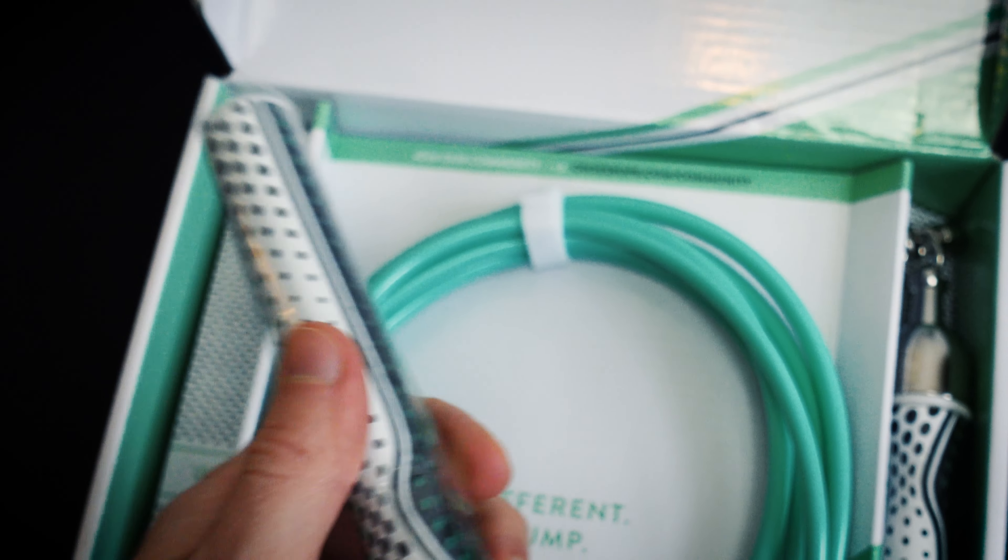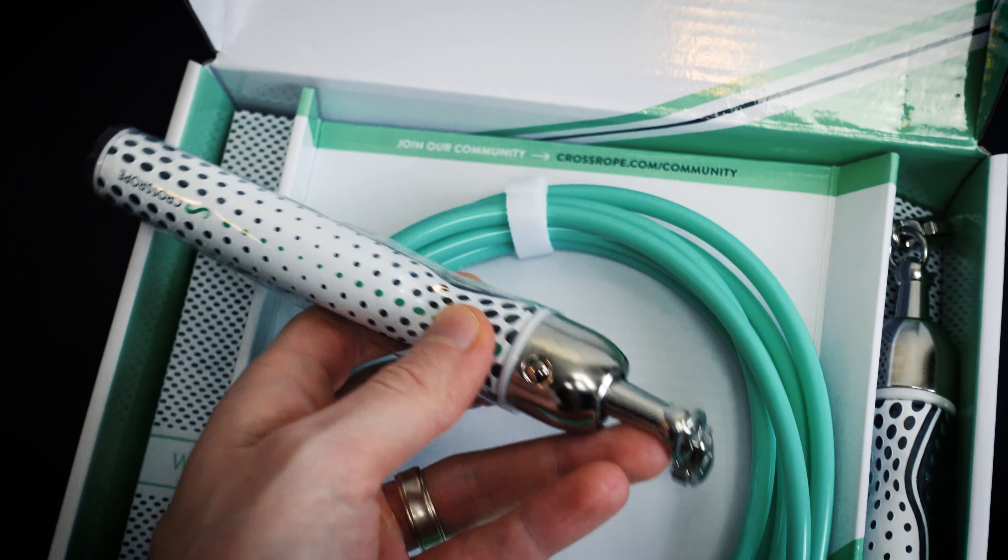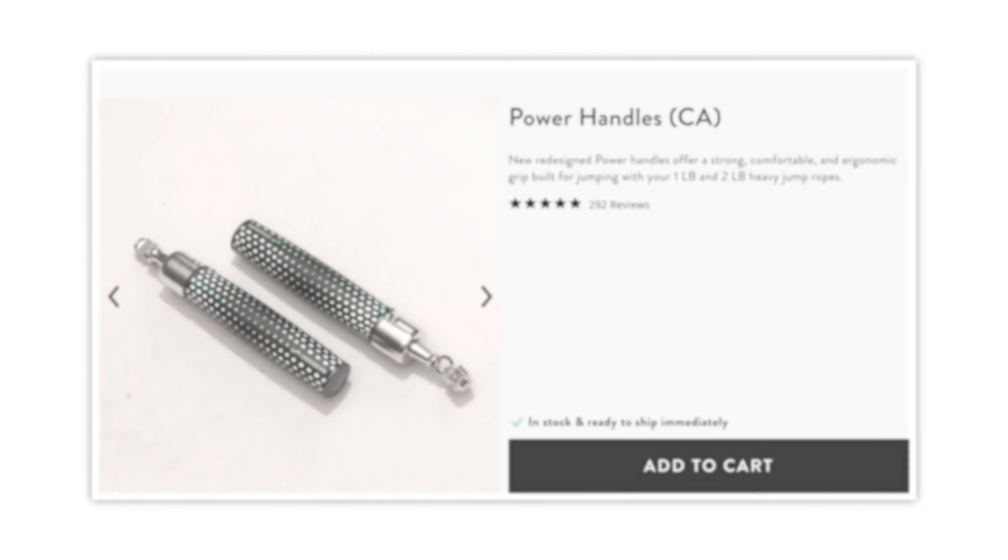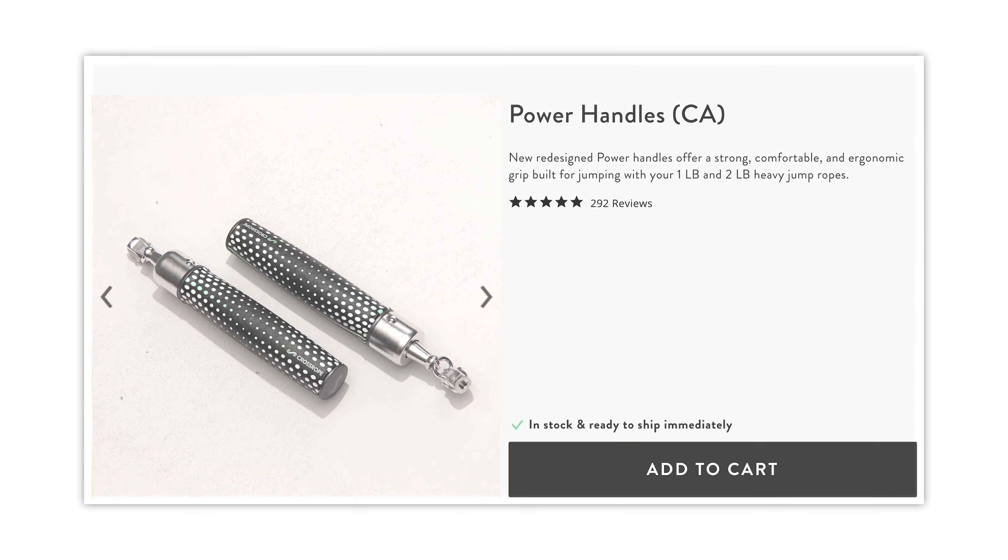The included handles in most bundles are called the slim handles. Surprisingly grippy, soft, and comfortable to hold. Now you can also get the power handles if you choose to mainly jump with heavier ropes.